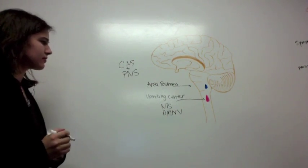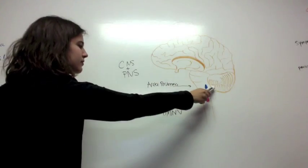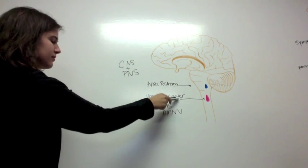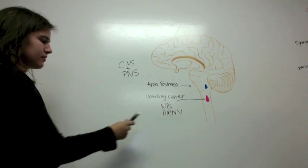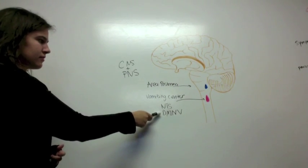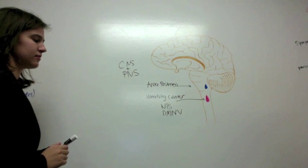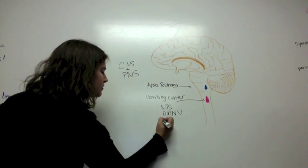The medulla contains the vomiting center, which is comprised of two distinct groups of brainstem nuclei, the nucleus tractus solitarius and the dorsal motor nucleus of the vagus. These nuclei receive information promoting emesis from various areas.